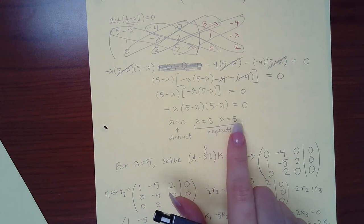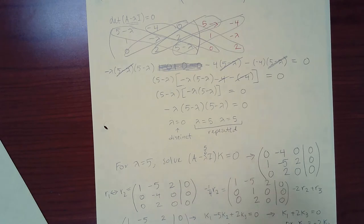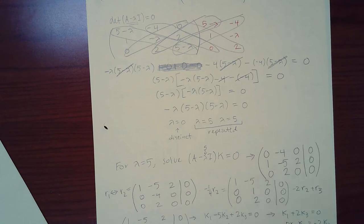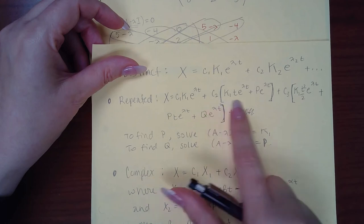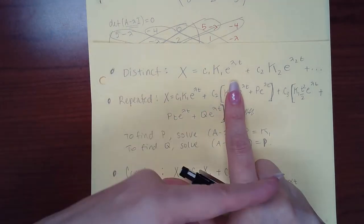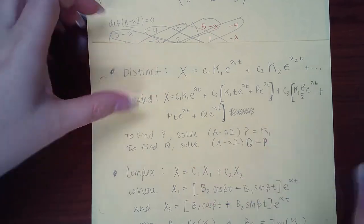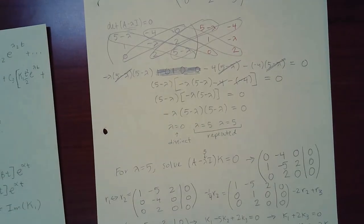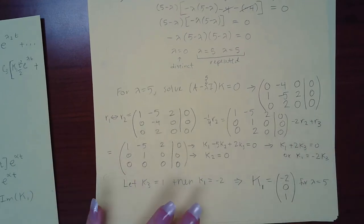Since lambda equals five repeats, to find both solutions I need to find k and then also find p. The way you put those together is different — you don't just say k·e^(5t) and p·e^(5t). The first term has k·e^(5t) and the second term has k·t·e^(5t) plus p·e^(5t). Be careful to follow that formula for repeated eigenvalues. To find k, we solve (A minus lambda·I)k = 0 with lambda = 5.